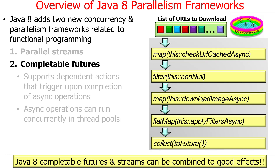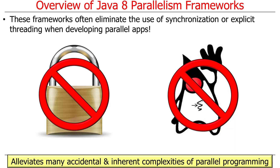One really cool thing is you can combine Java 8 completable futures and streams to do even more powerful computations — asynchronous computations within the structuring confines of a stream. Your last assignment will give you a chance to explore that. A key benefit of all three frameworks — fork-join, parallel streams, and completable futures — is that they often eliminate the need for synchronization and explicit thread creation. All the thread management is hidden from you by the framework, reducing the accidental and inherent complexities of parallel programming.